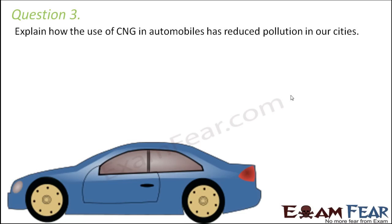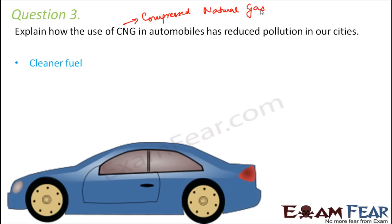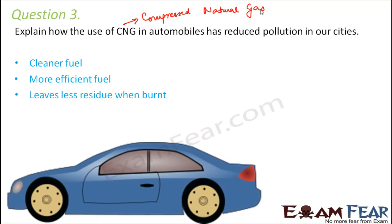Question number three: explain how the use of CNG in automobiles has reduced pollution in our cities. CNG stands for compressed natural gas. CNG is comparatively a cleaner fuel when compared to petrol or diesel. It is very efficient because it leaves very little residue when completely burnt. When a fuel leaves a lot of residue, that causes trouble to the environment and also indicates the fuel was not efficient — only a small part of it actually produced energy.